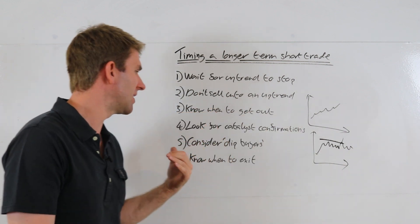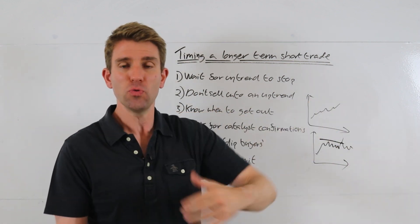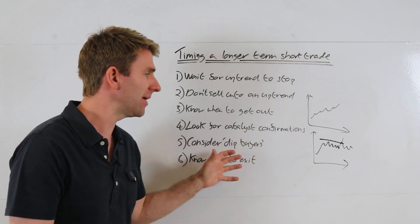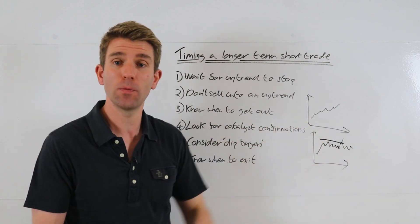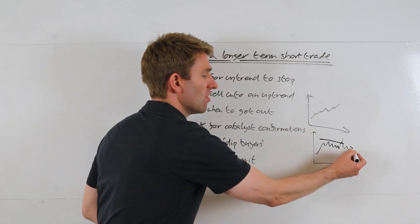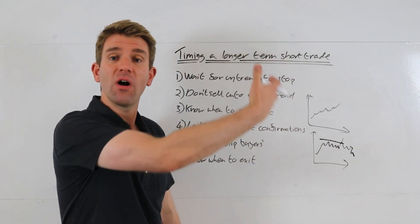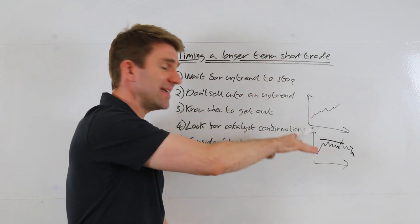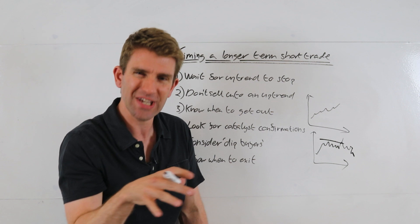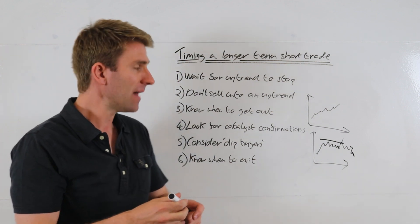So, you know, that's the best scenario for you to initiate the short and knowing that if it breaks that range, you cut it. You're gone. You're not going to get involved anymore. Okay? Now we're looking for catalyst confirmations. Could be on a technical basis—so it starts to drift lower, rest of the market's pushing higher, rest of the sector is strong, this thing's drifting lower.